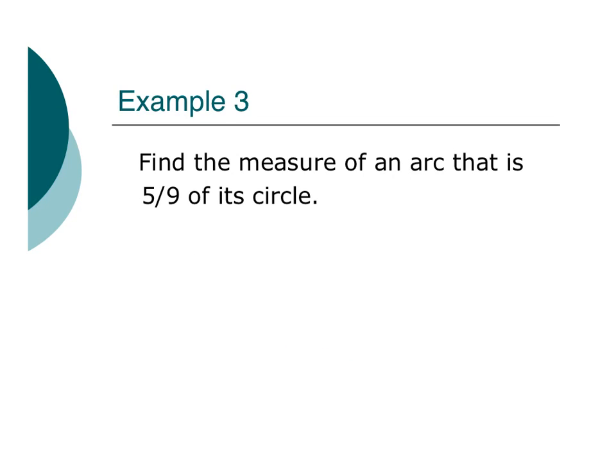So let's find the measure of an arc that is 5 ninths of its circle. Well, if it's 5 ninths of its circle, I need to figure out, well, what degree measure would that equal? So if I take 5 ninths and I set it equal to x over 360, that's going to tell me right here what degree measure of the circle that it is.